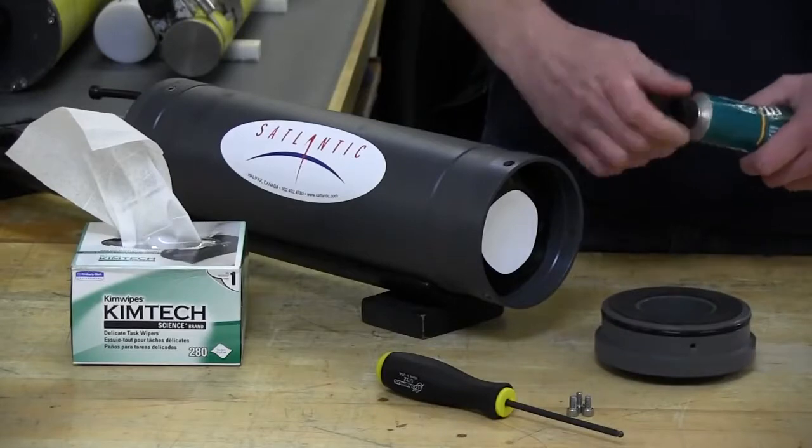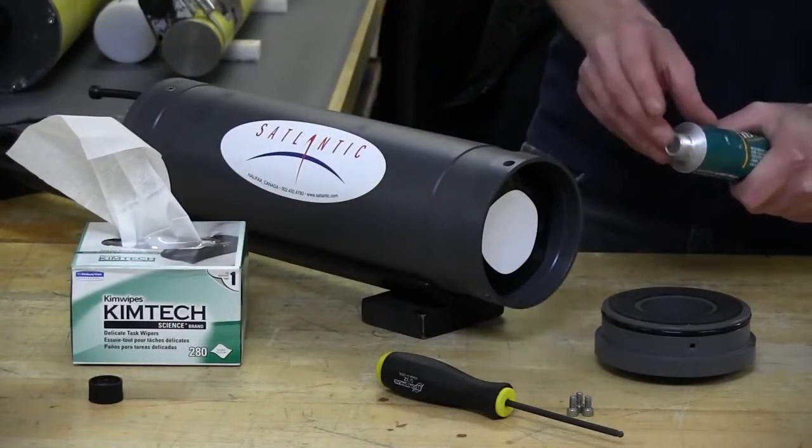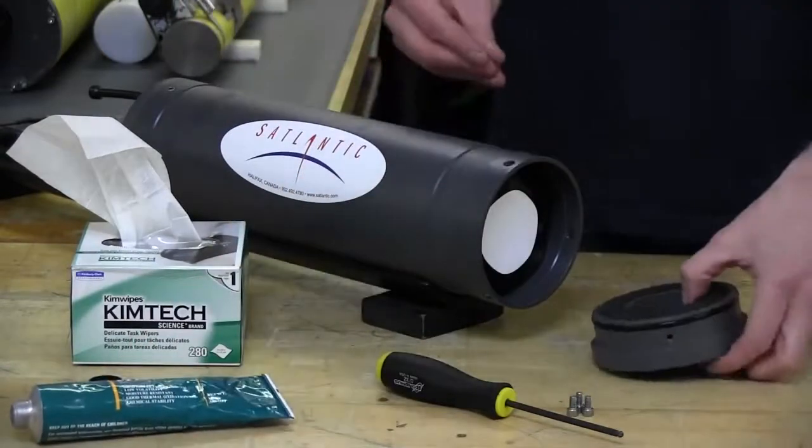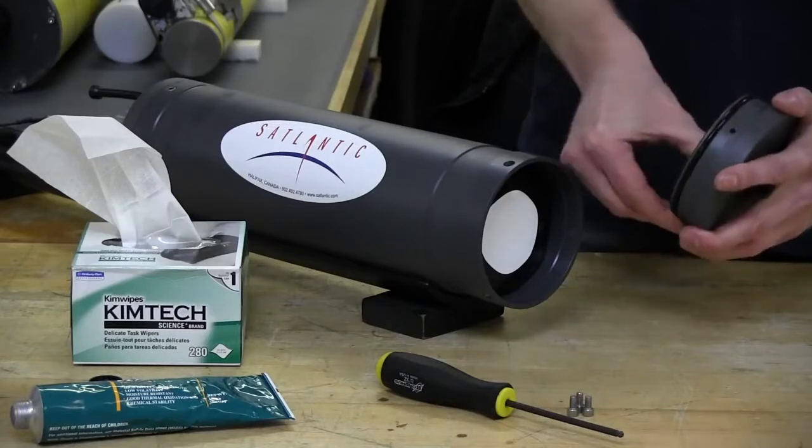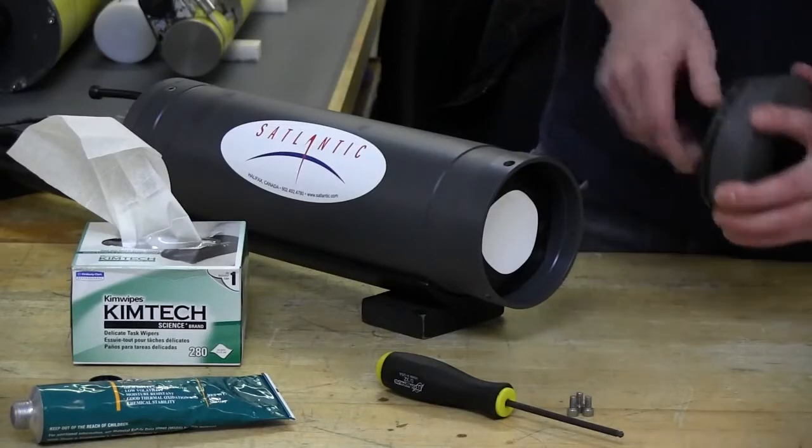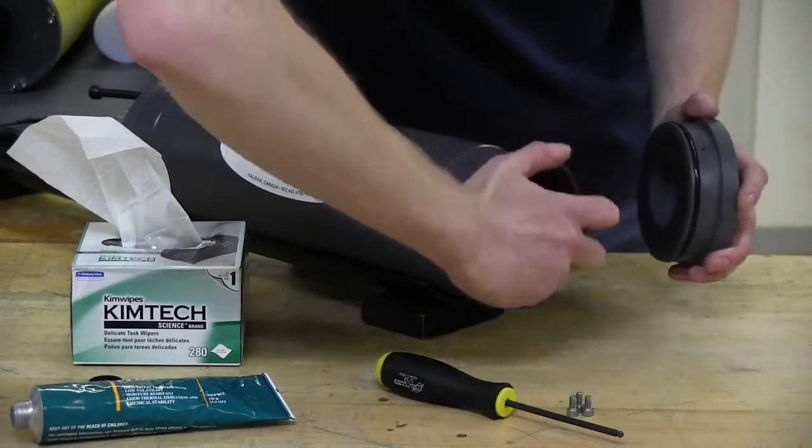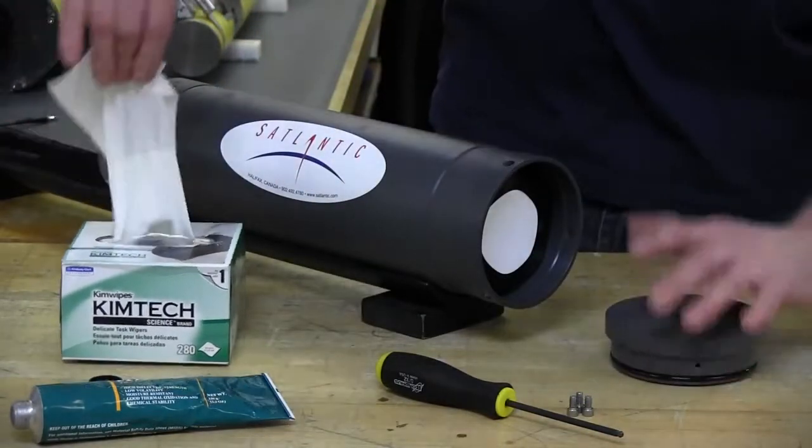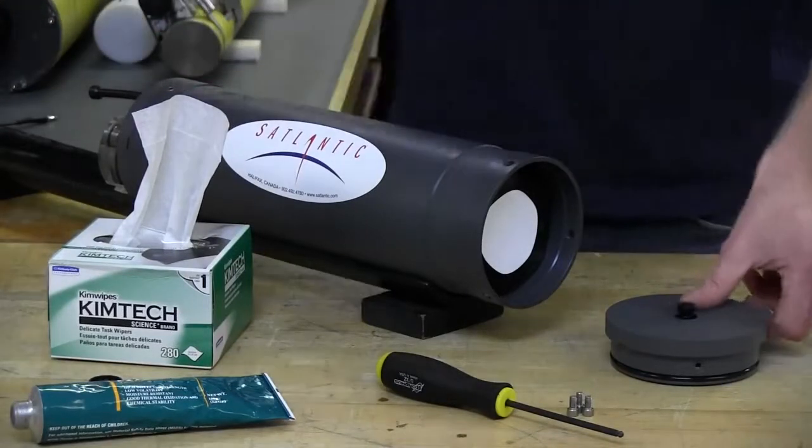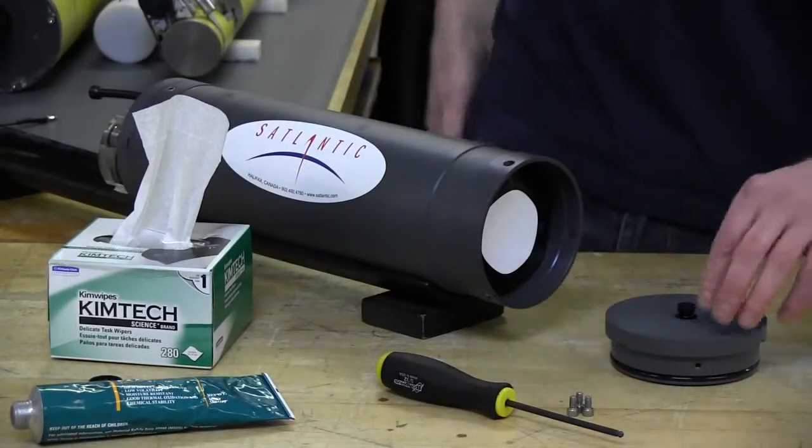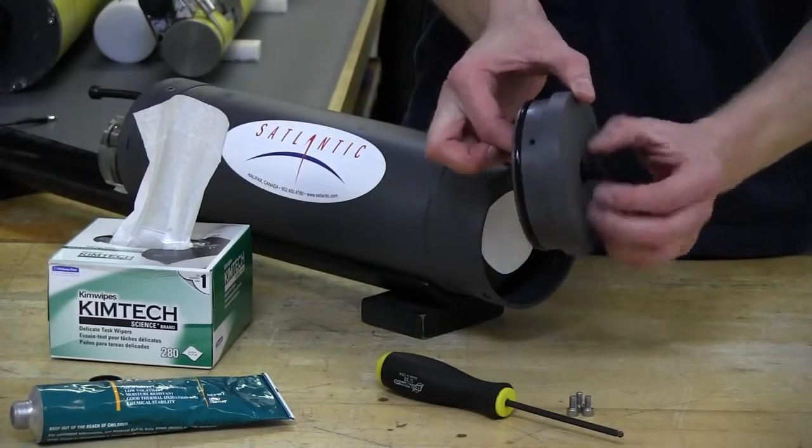We're going to add some of our Dow Corning 111 O-ring grease to the O-rings. You don't need a lot of it, but you do need some for sure. Apply a thin film onto the O-ring itself as well as inside the housing on the O-ring surface. It'll make it a lot easier when installing the end cap. Also, to avoid pneumatics fighting against you, make sure that the vent plug is in fact in the vented position.